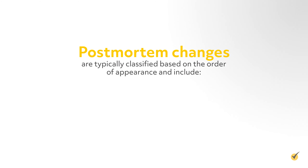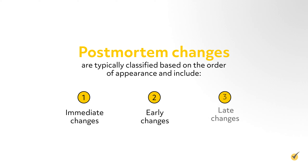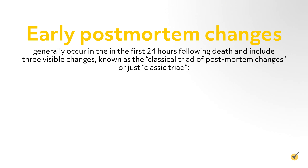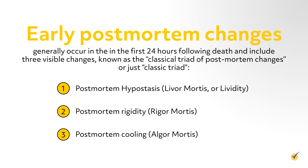Postmortem changes are typically classified based on the order of appearance and include immediate changes, early changes, and late changes. Early postmortem changes generally occur in the first 24 hours following death and include three visible changes known as the classical triad of postmortem changes: postmortem hypostasis or livor mortis, postmortem rigidity or rigor mortis, and postmortem cooling or algor mortis.